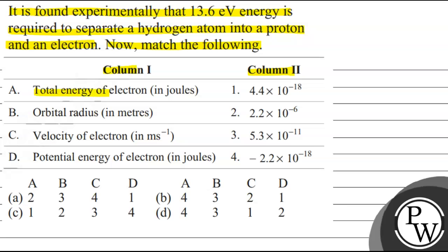Column 1 contains: the total energy of an electron in joules, orbital radius in meters, velocity of electron in meters per second, and potential energy of electron in joules. Column 2 contains the values: 4.4×10⁻¹⁸, 2.2×10⁶, 5.2×10⁻¹¹, and -2.2×10⁻¹⁸.